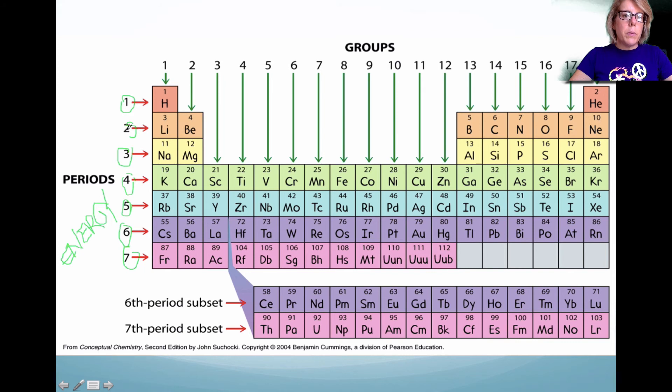So when you're looking at the energy level of a valence electron in the first column, this would be energy level two for this valence electron.